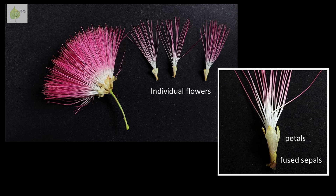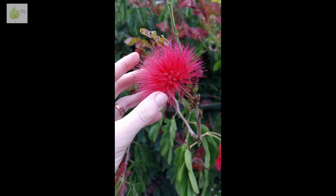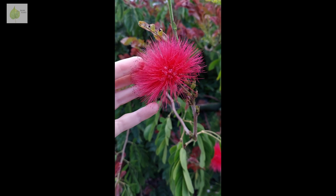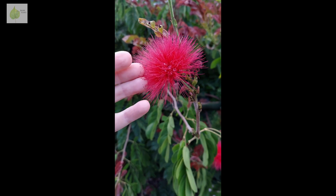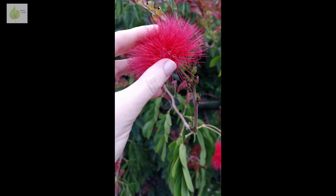If we actually isolate an individual flower out of this Calliandra inflorescence, we do in fact find five fused sepals and five petals. And all of these parts creating that spiky look are stamens, with one style hiding in the middle.